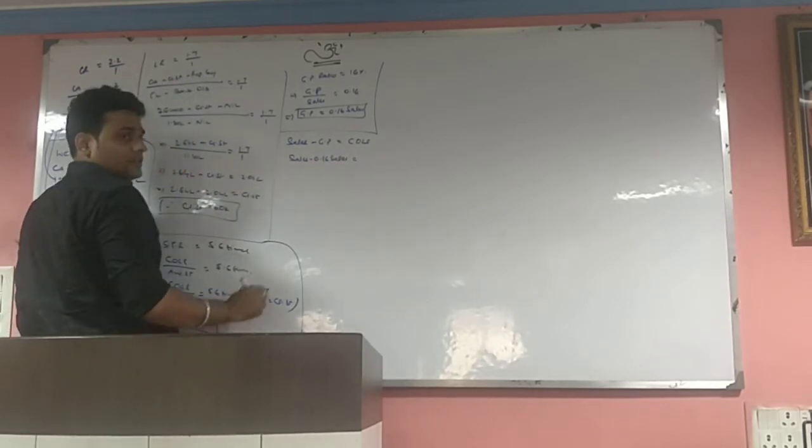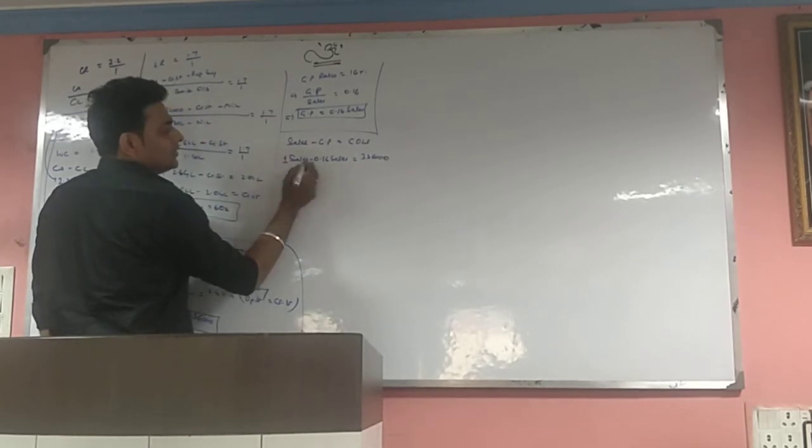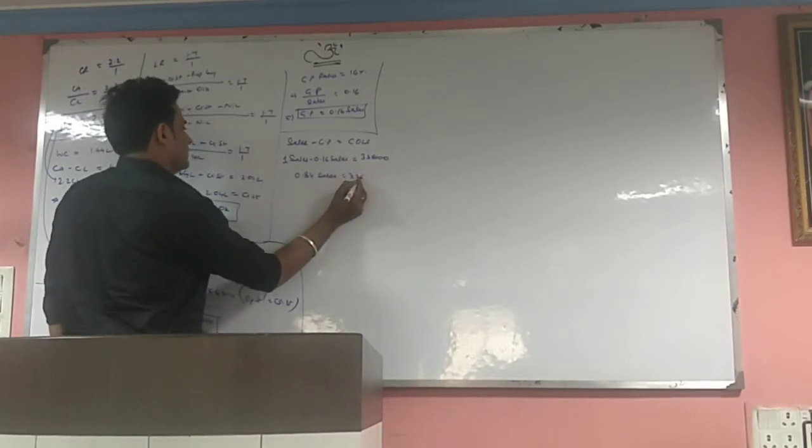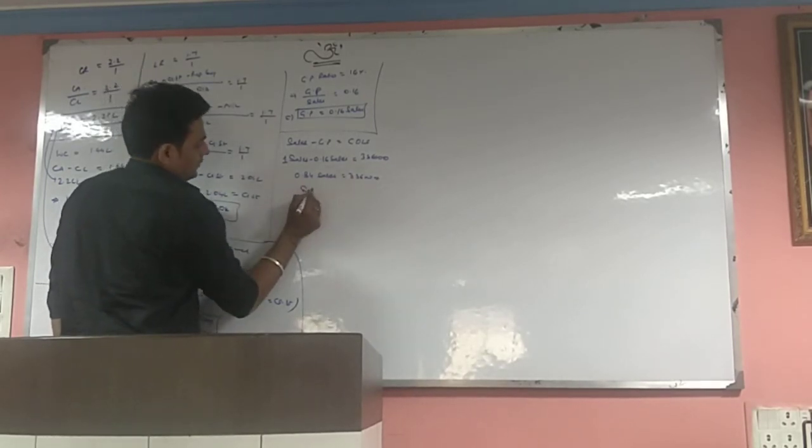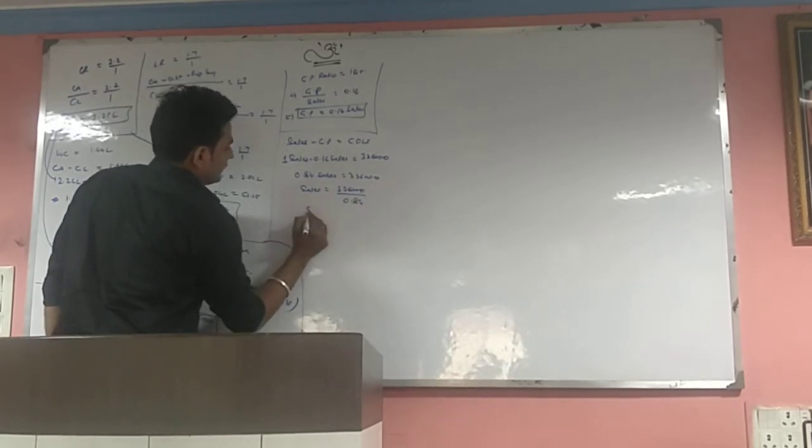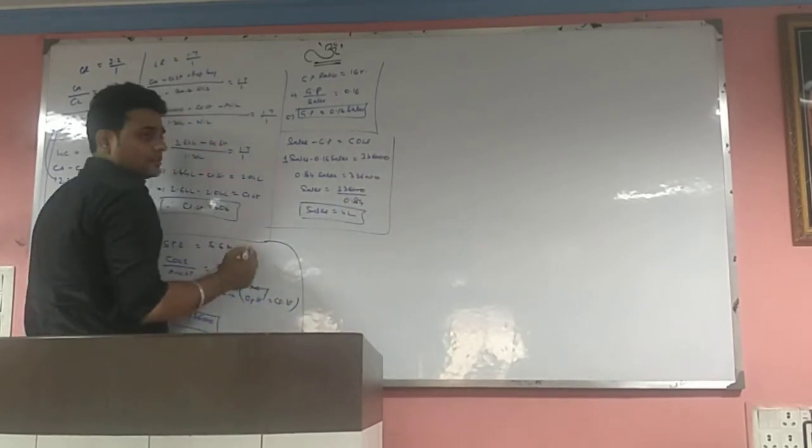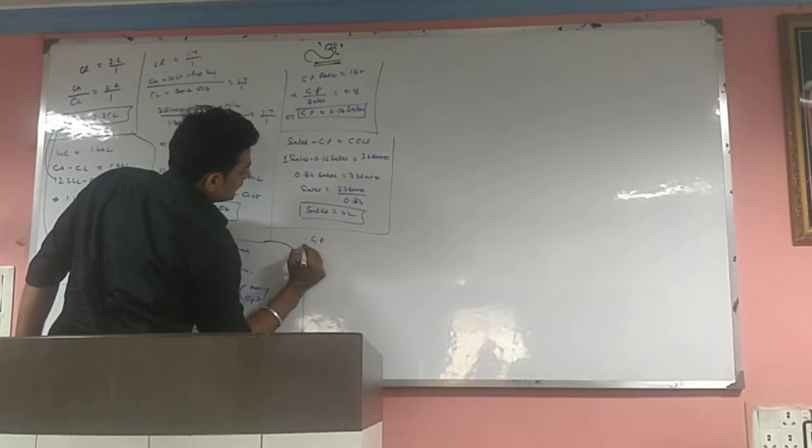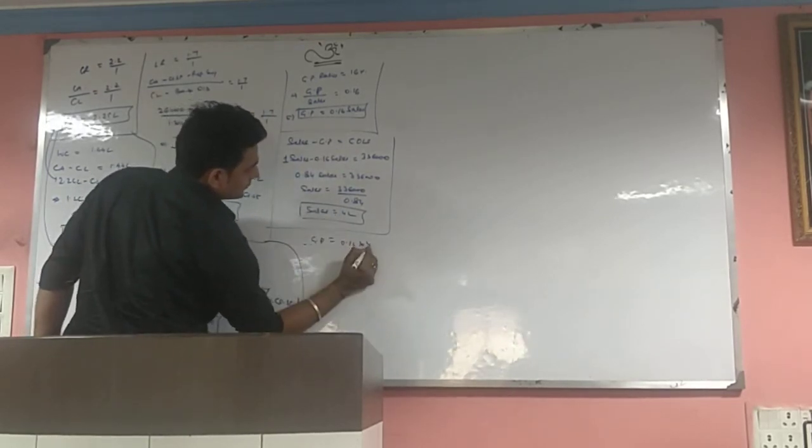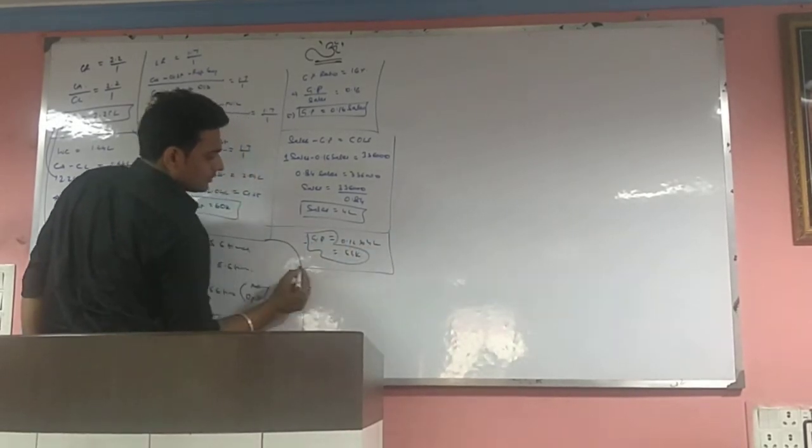Sales minus GP equals COGS potentially. GP equals 0.16 Sales. We found COGS is 3,36,000. This means 1 minus 0.16 equals 0.84 Sales equals 3,36,000. Sales equals 3,36,000 divided by 0.84. Sales equals 4,00,000. Sales is found.